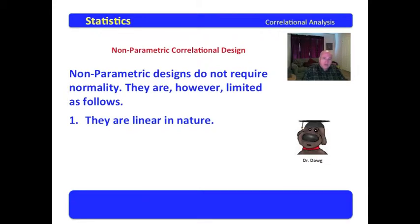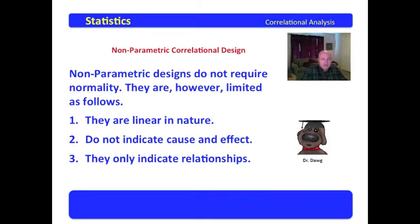The ones that we will look at are linear in nature as well. They give values very similar to the Pearson R, and those values are to be interpreted for linear correlations. And they still do not indicate cause and effect. To indicate cause and effect, we have to use a different design. All that the correlational design does is to indicate relationships.